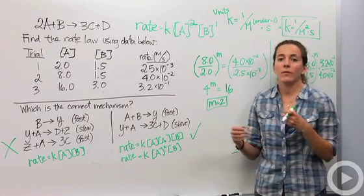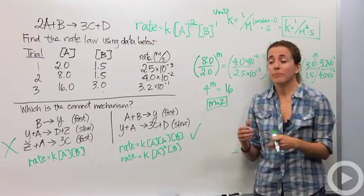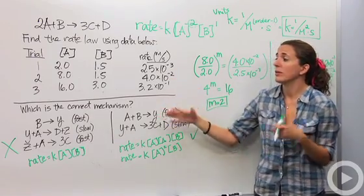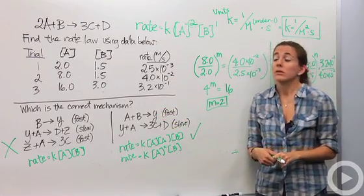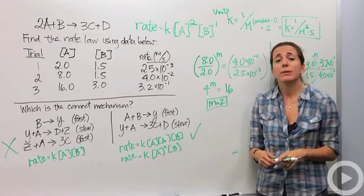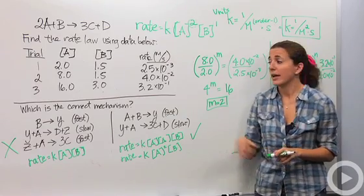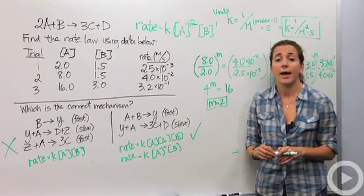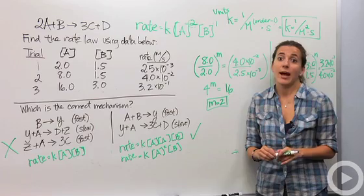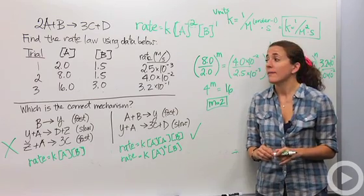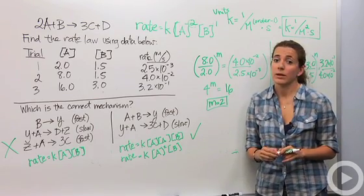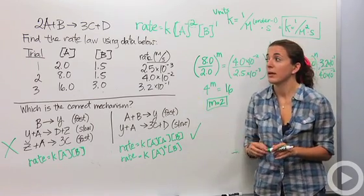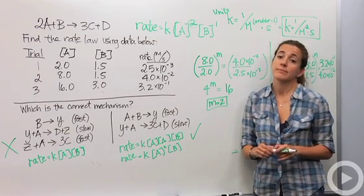Just use the information that you know, and mathematically you can always figure something out. Rate laws can be pretty difficult, and there are even more topics like integrated rate laws, half-life, and activation energy that you might deal with in AP chemistry. But this covers your basic honors-level rate law problems.